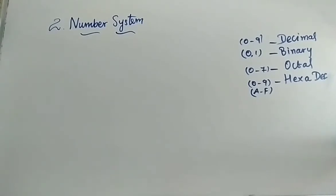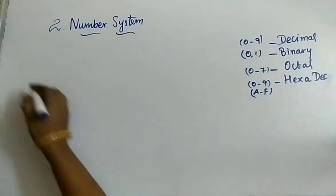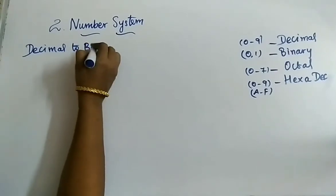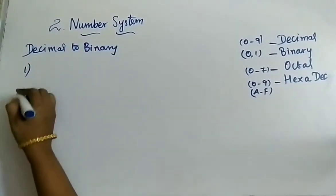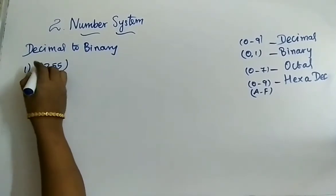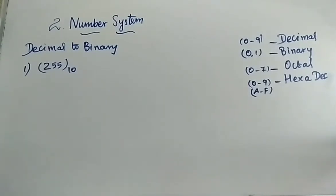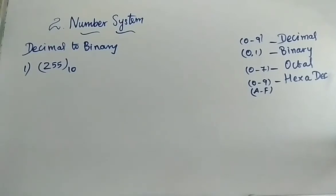First, we will see the model: convert decimal to binary. Consider the problem 255 to the base 10. How do you identify this is a decimal number? By seeing the base — the base is 10, so the given number is decimal. For decimal to binary, you will be performing repeated division by 2.